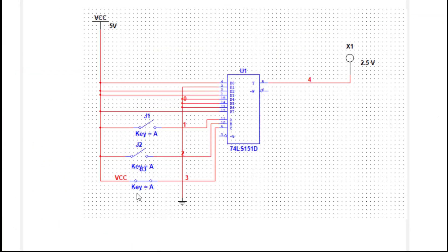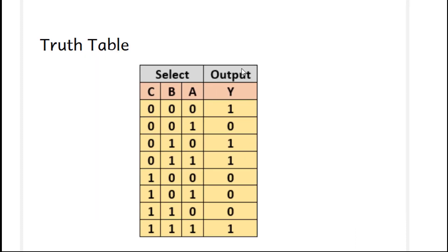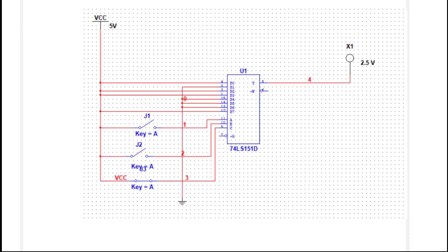We give all combinations and verify the output. For 000 we get 1; for 001 we get 0; for 010 we get 1; for 011 we get 1; for 100 we get 1. So cell numbers 0, 2, 3, and 7 give output one, and the remaining are zero. This is how we implement and verify the function directly using the multiplexer IC without K-map simplification.